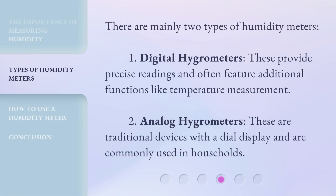There are mainly two types of humidity meters. One: digital hygrometers — these provide precise readings and often feature additional functions like temperature measurement. Two: analog hygrometers — these are traditional devices with a dial display and are commonly used in households.